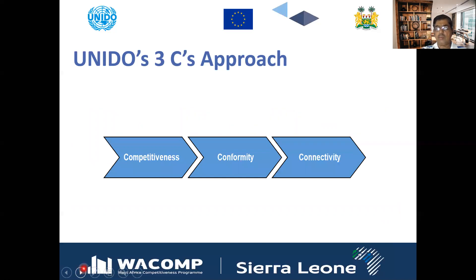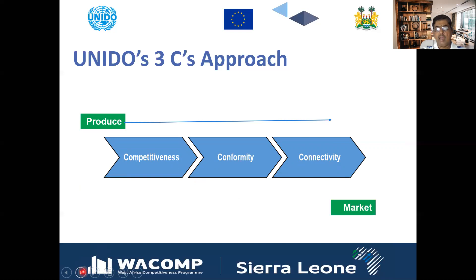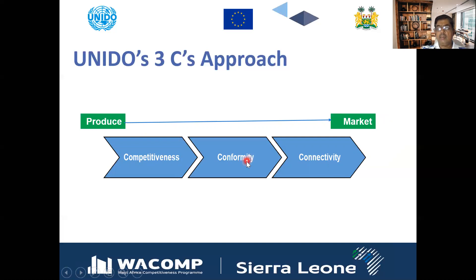UNIDO always follows the 3C approach. First we develop the competitiveness for the selected products. Then we create the conformity and the conformity assessment structure. Later on we link those products to the regional and international market, and that is not possible if the produce and the value chain are not following the standard and not complying with the conformity assessment structure. It is very difficult and nowadays impossible to connect these products into the global market.